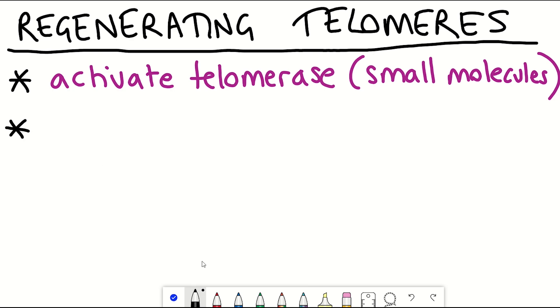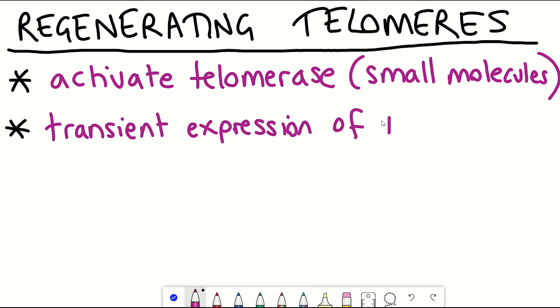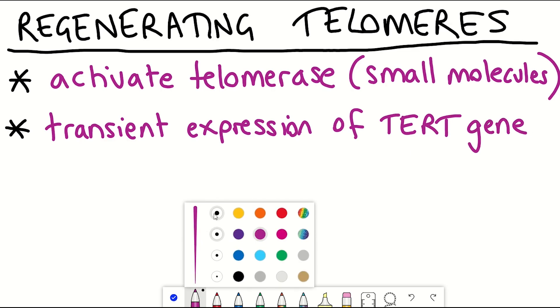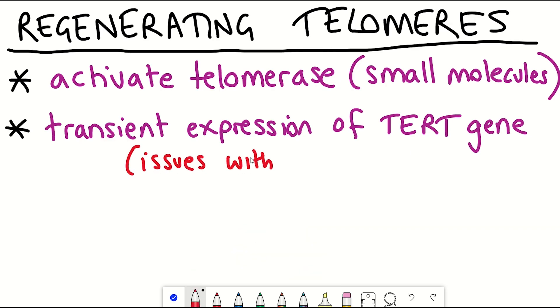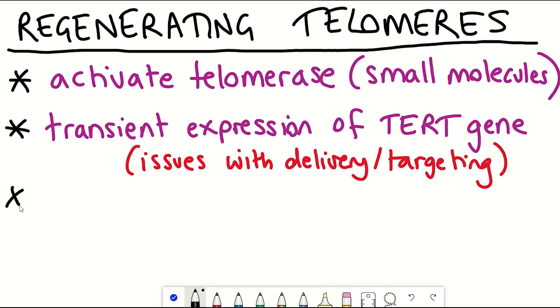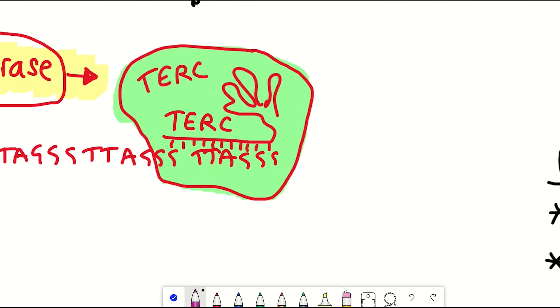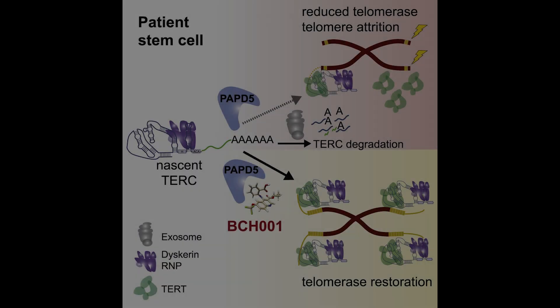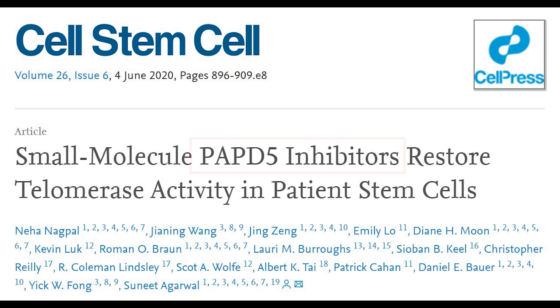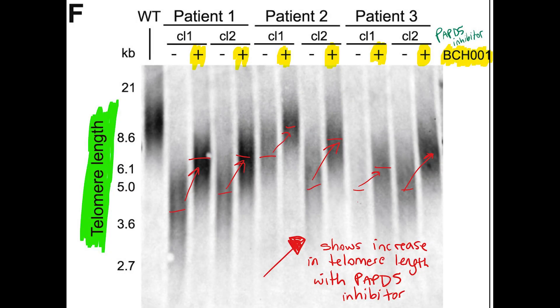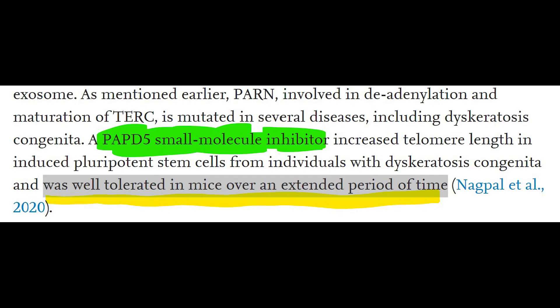Alternative approaches include transient ectopic expression of TERT using viral factors or modified RNA, though one issue is getting widespread tissue exposure and targeting stem cells. Another approach is to stabilise TERC — the RNA component of telomerase. TERC gets tagged for degradation by the protein PAPD5, and a study published last year identified a small molecule inhibitor of this protein, showing it extends telomeres of cells in culture and is well-tolerated in mice for several months.